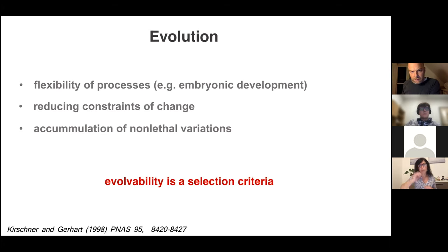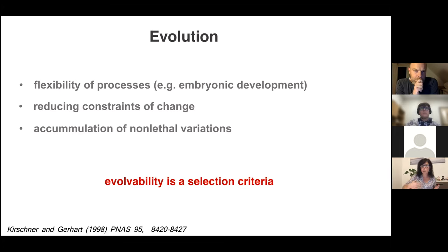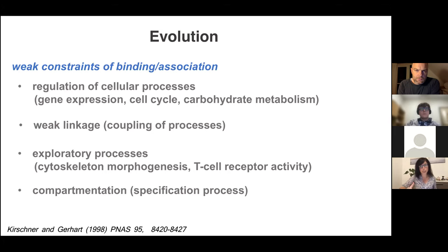As a third piece of evidence, we also knew that evolvability might be a selection criterion. Some processes, like embryonic development, require a large degree of flexibility—the constraints on many different biochemical properties have to be reduced in order to accumulate non-lethal variations. From that 1998 paper, this means there are weak constraints on binding or associations, including regulation of cellular processes like gene expression, cell cycle, and carbohydrate metabolism.